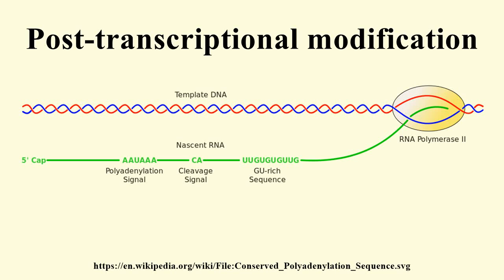Post-transcriptional modification, or co-transcriptional modification, is a process in cell biology by which, in eukaryotic cells, primary transcript RNA is converted into mature RNA. A notable example is the conversion of precursor messenger RNA into mature messenger RNA, which includes splicing and occurs prior to protein synthesis.